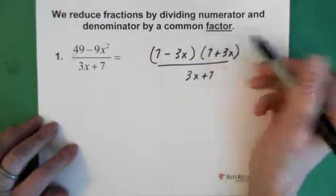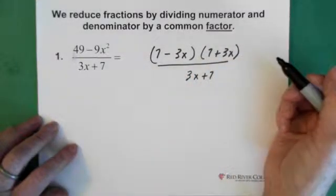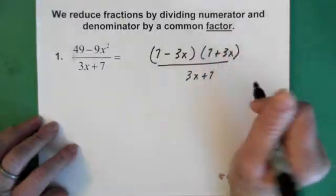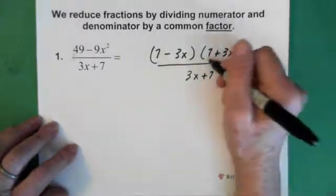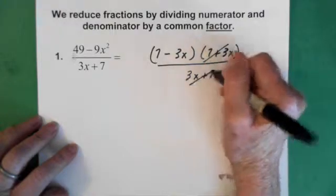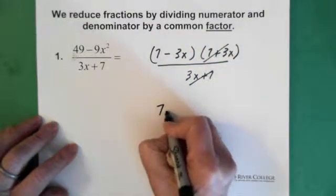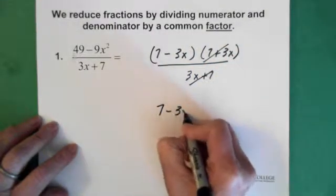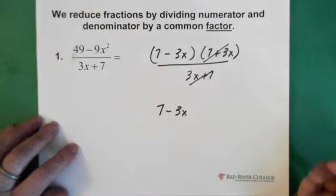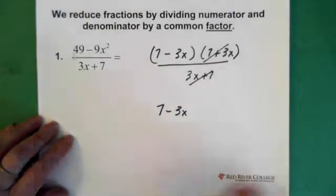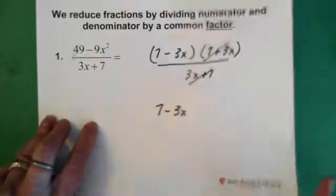And we know that 7 + 3x is the same as 3x + 7, just written backwards to one another. So these two cancel, and our final answer is 7 - 3x. So that one was pretty nice and simple, which is a good way to have them.